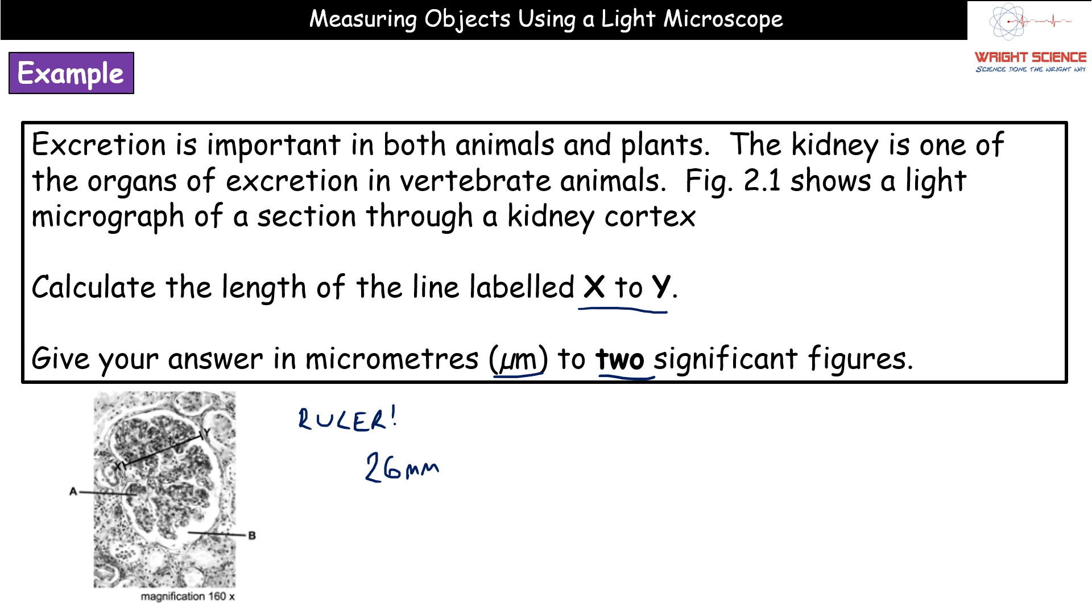Now down here we can see that the magnification is times 160. So what we need to do first is we are going to take our 26 and we're going to divide it by 160. When we do that we get an answer of 0.1625. That's still in millimeters. We need it in micrometers. So we're then going to multiply that by a thousand to give us our answer in micrometers which gives us 162.5 micrometers.